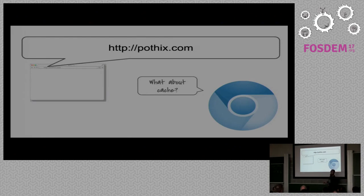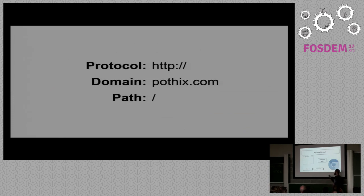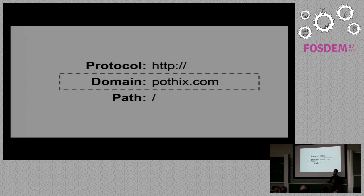The next question is: do we have cache for that? We'll assume in this presentation there's no cache anywhere, because with cache it would be easy — just return the cache and thank you. We'll continue without caching. Caching can be done via Expires, Cache-Control, or ETags — a lot of HTTP headers. With no cache, the browser will split the URL into three different parts: protocol, domain, and path. We need to continue through the domain because the internet doesn't know what potix.com really means — we have to use IP addresses.